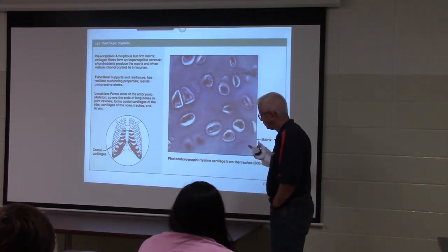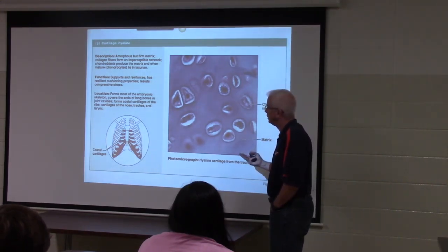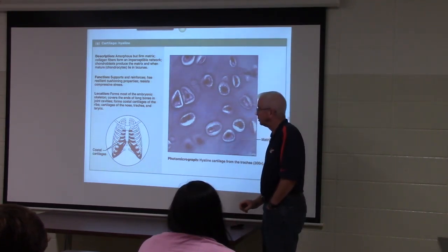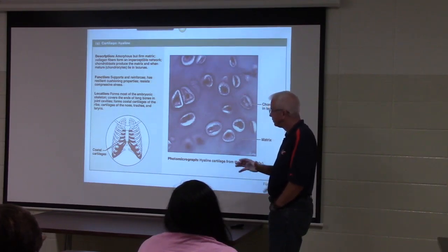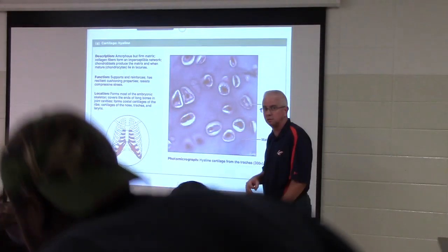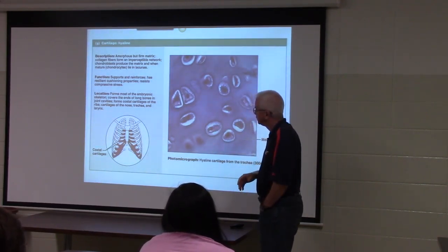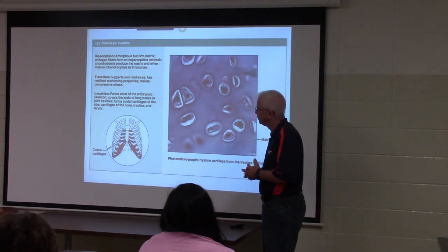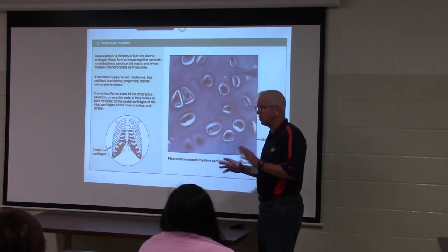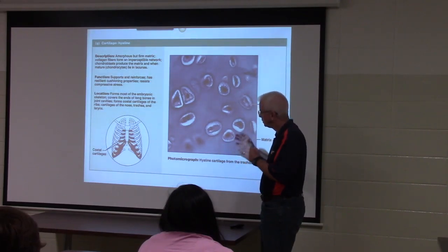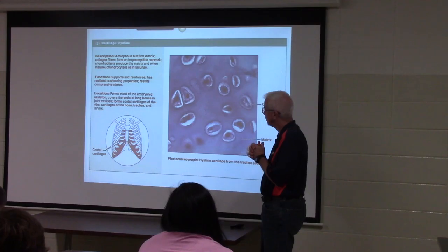This is the first of three kinds of cartilage to discuss. More than appearance, the focus will be on locations. Appearance was emphasized for epithelial and connective tissues, but for cartilages the instructor wants to emphasize where they are, since connective tissue proper is found almost everywhere, while cartilage and bone have very specific anatomical locations.